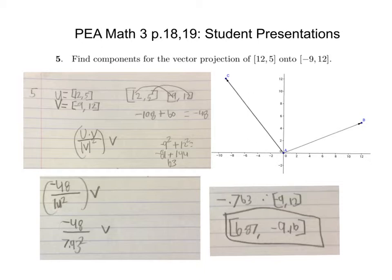Find components for the vector projection of [12, 5] onto [-9, 12]. I first found the dot product using the formula: the dot product of vectors u and v divided by the magnitude of vector v squared times v. I found the dot product of u and v, which came out to negative 48. Then I found the magnitude of v by doing the Pythagorean theorem, which came out to 63, so 7.93.